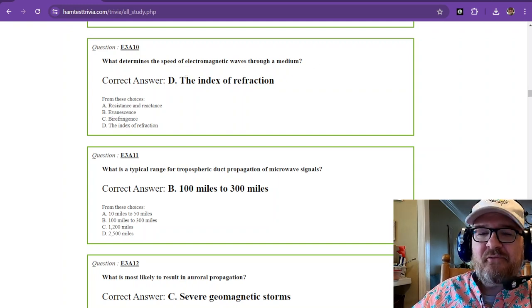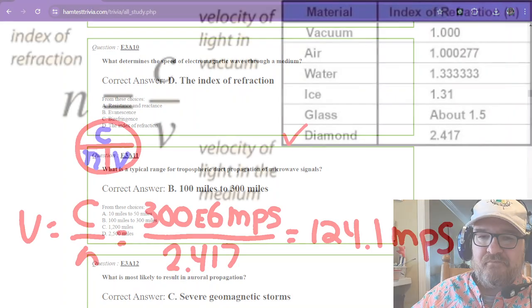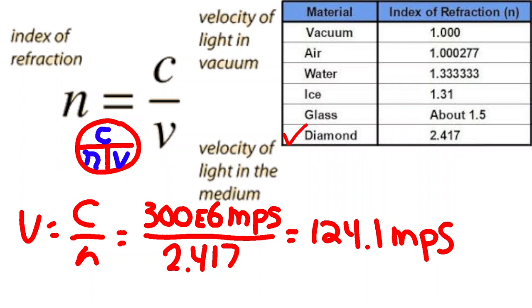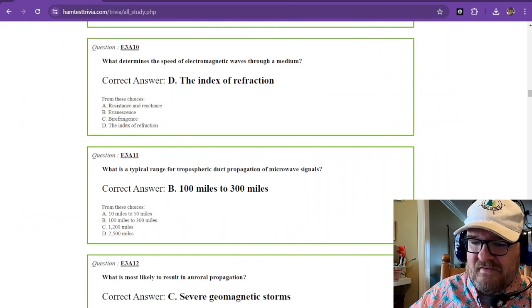What determines the speed of electromagnetic waves through a medium? This is the index of refraction. I've done a nice little math thingy here for you. The index of refraction is the letter n, and it's just a ratio of the velocity of light in a vacuum and the velocity of light in a medium. So I picked diamond because I found this number to be quite astronomical compared to air and water. And rearranging the formula, we get velocity equals c divided by n. And so you have 300 million meters per second divided by 2.417. So light only travels at 124 meters per second through diamond. That is the index of refraction.